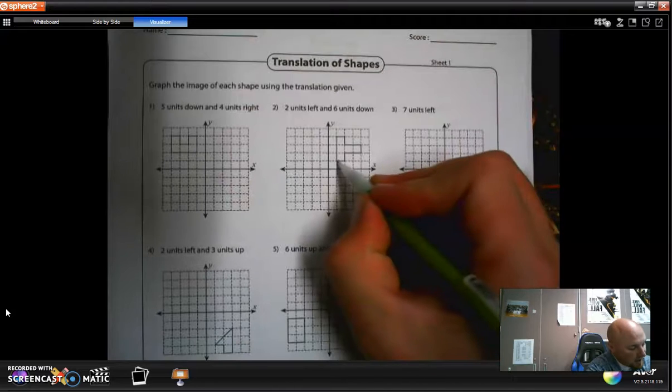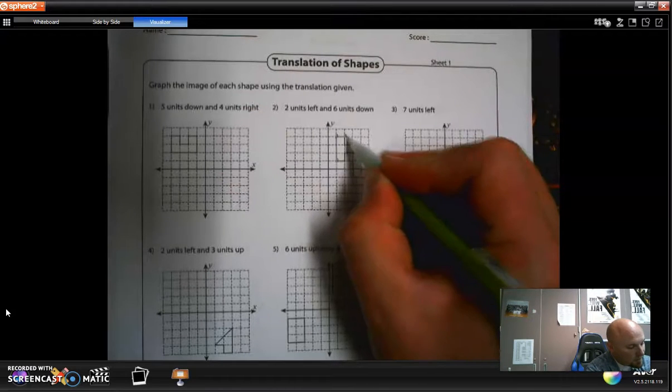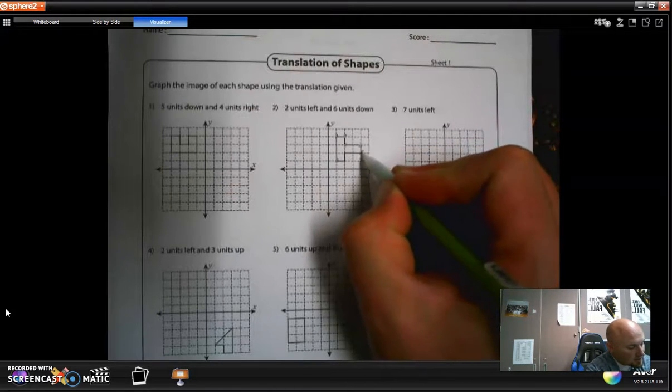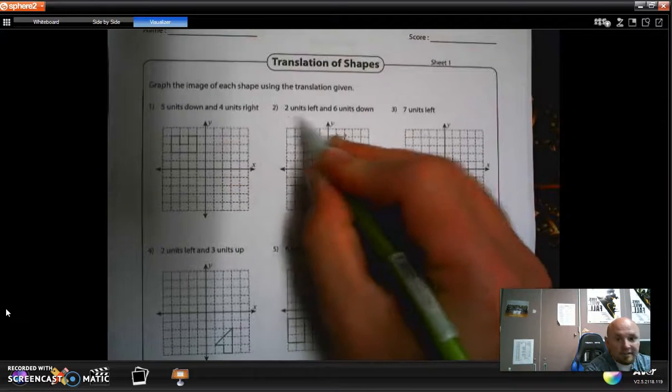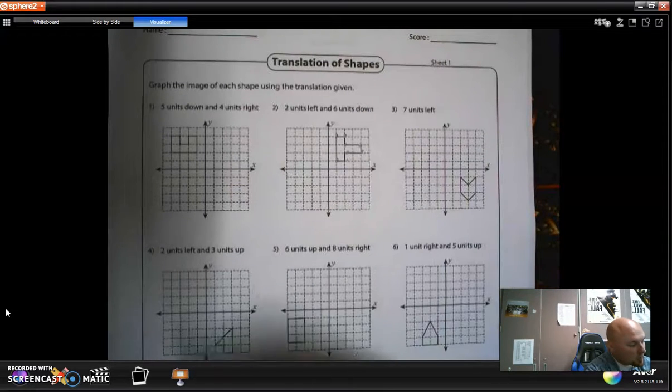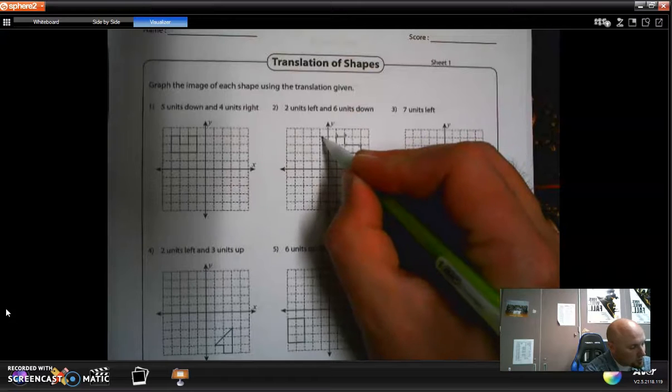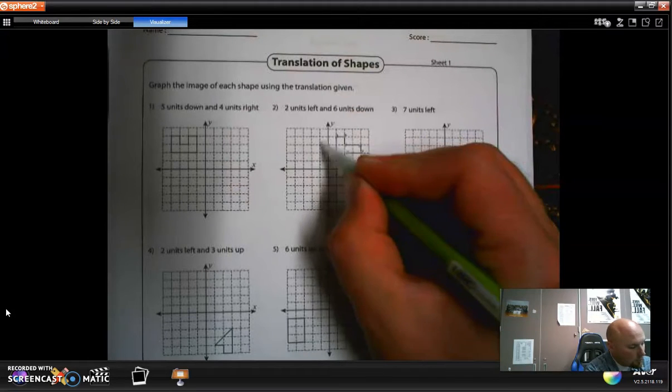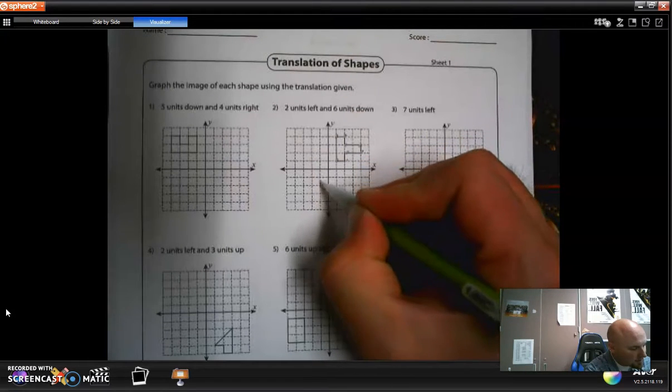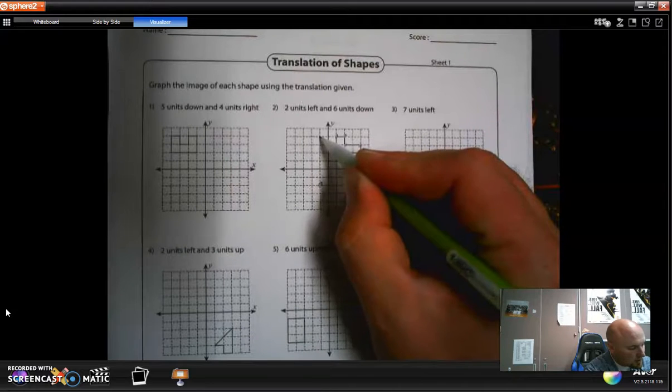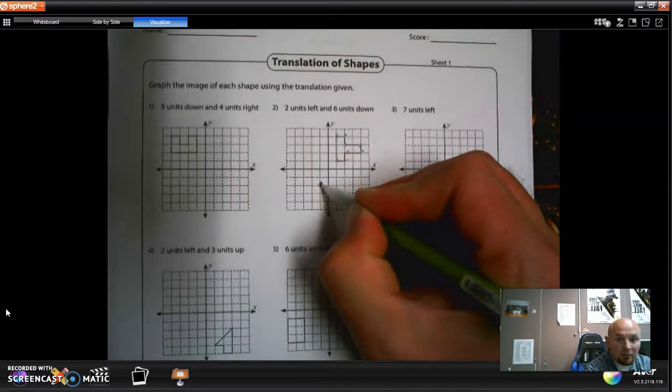It wants to go two units left and six units down. That means every point, every corner, every piece of this is going to slide two units left and six units down. So I'm going to take this top corner, two units left, one, two, and six units down. One, two, three, four, five, six. That means this corner goes here and there in the end of the line.